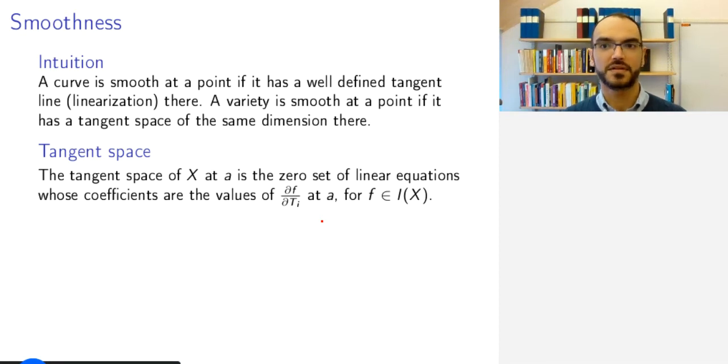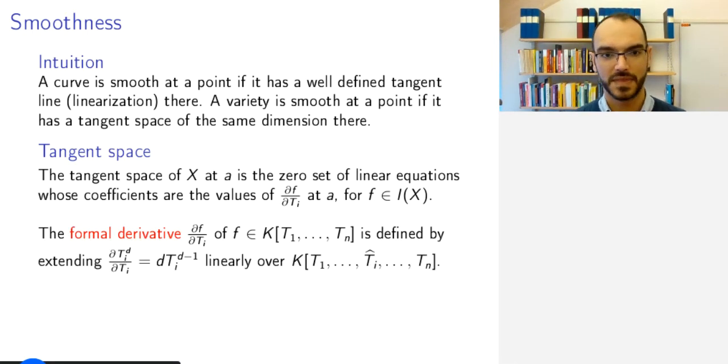However, the formal derivatives or the derivatives of polynomial functions can always be defined over any field. Namely, as you have always done, by saying that the derivative of t_i to the power d with respect to t_i is obtained by pulling down the coefficient, the exponent and reducing the exponent by one. And you do this linearly over the other variables, so this means that this notation means that t_i is not included.